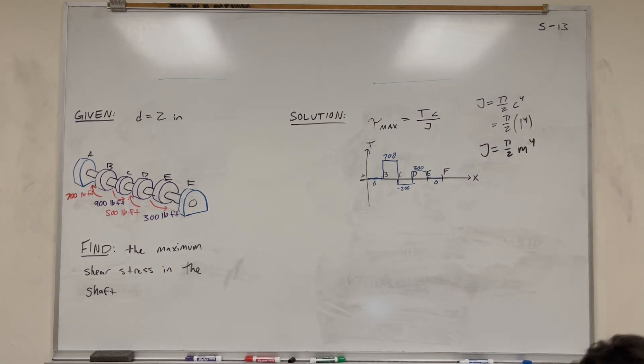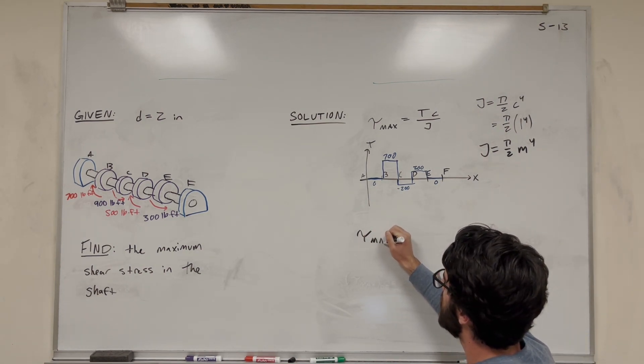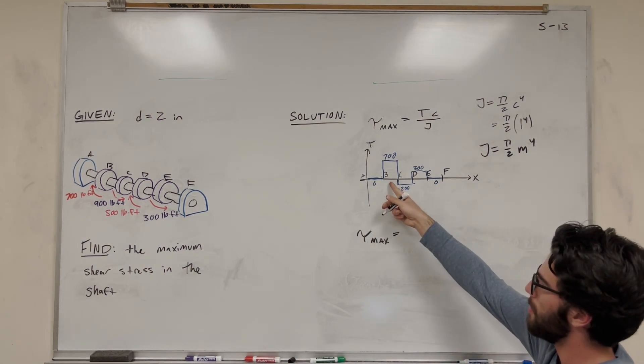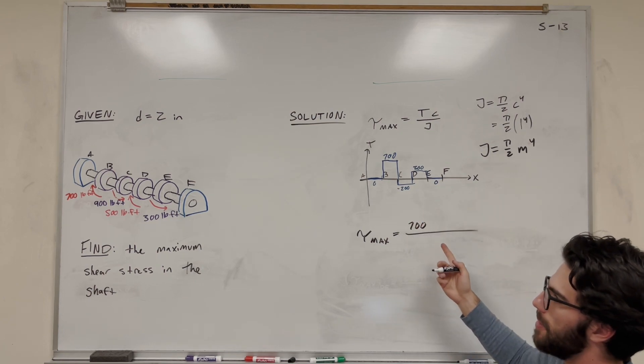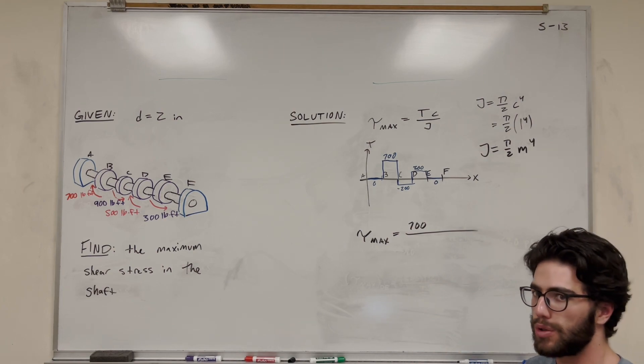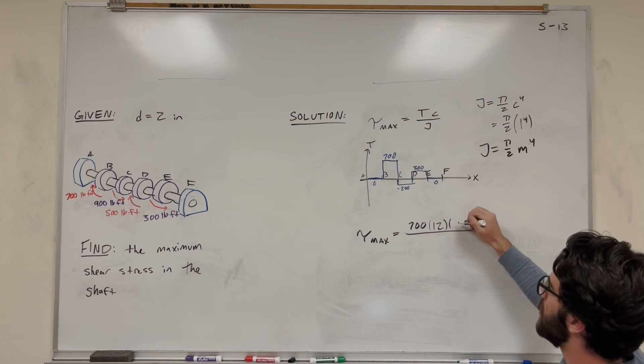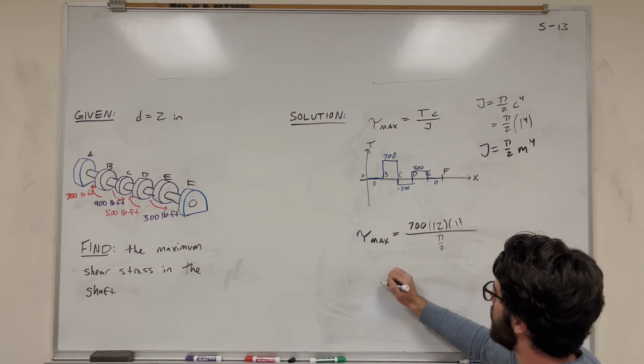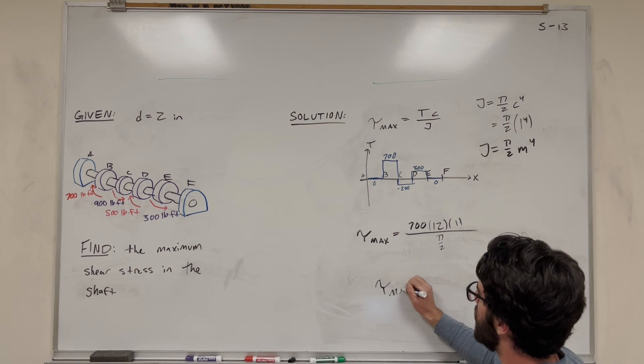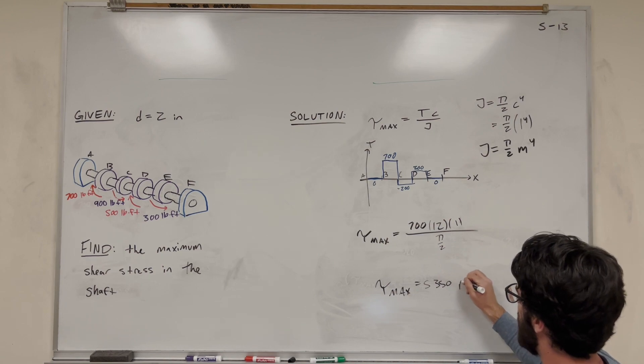Now all that's left is to plug in our numbers. We're going to get that our maximum shear stress, which occurs in segment BC, is equal to 700 pound-feet. Now we're in pound-feet on the top and we need to convert to inches because we're using psi, so to convert from pound-feet to inches, we're going to multiply by 12. Then our radius is 1, so we're going to do 1. And then J is on the bottom, pi over 2. We're going to find that our maximum shear stress is 5,350 psi.